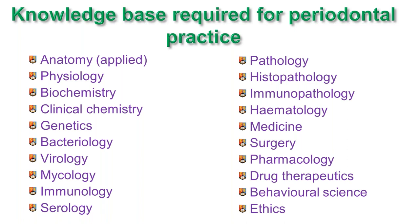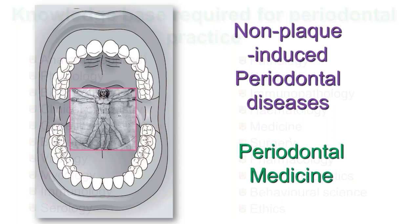This is a slide I show first-year students in Birmingham in their first perio lecture, to make the point that practicing the full scope of periodontology requires a working knowledge of anatomy, genetics, clinical chemistry, drugs and their side effects and interactions, medicine, surgery, behavioural science, ethics, and more. The cases I'll go through will each represent one or more of those disciplines, so hopefully you'll appreciate that I genuinely mean it when I tell the first years they need to know all of that.